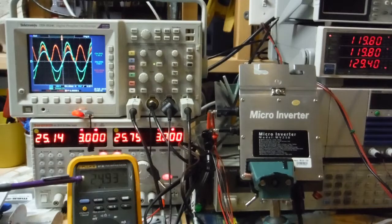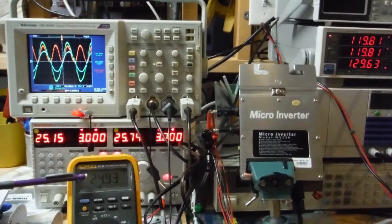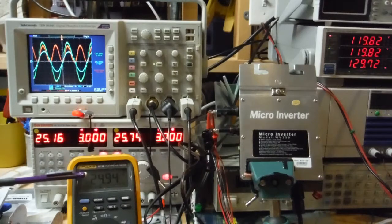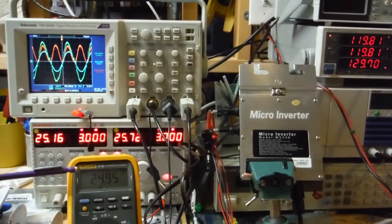So the input voltage is 24.9 volts, you can see on this meter. And that's at 6 amps.